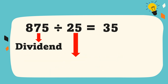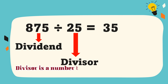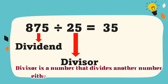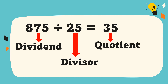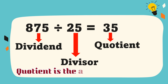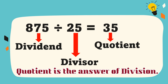25 is the divisor. Divisor is a number that divides another number either completely or with a remainder. Lastly, 35 is the quotient. Quotient is the answer of division.